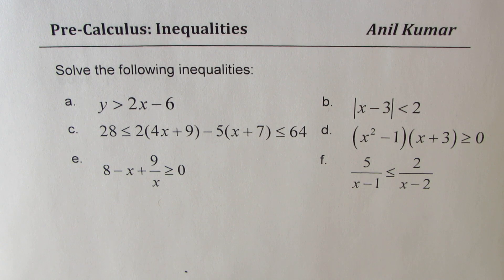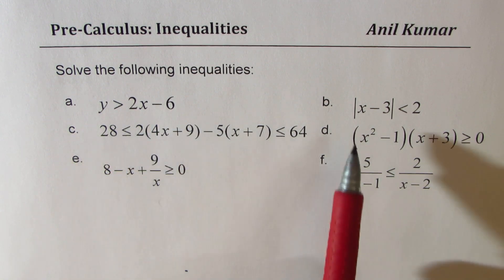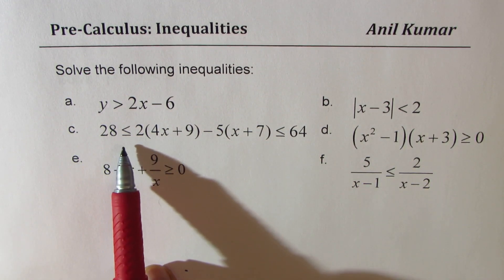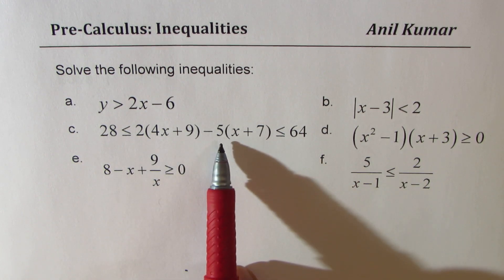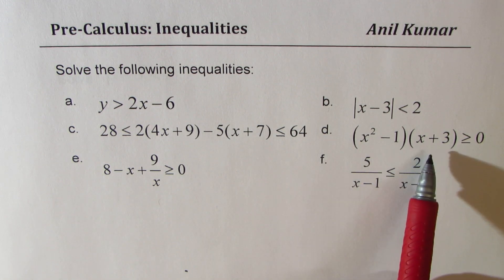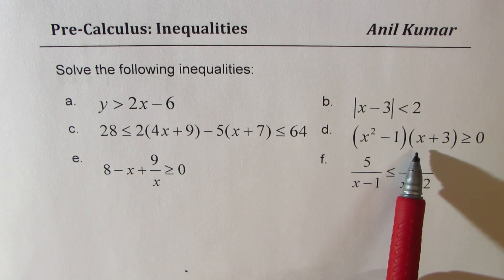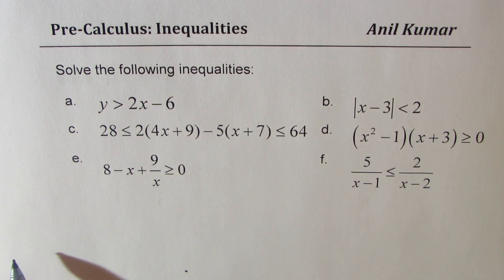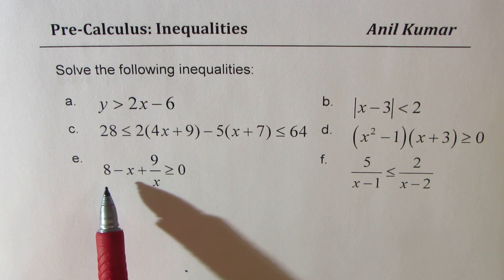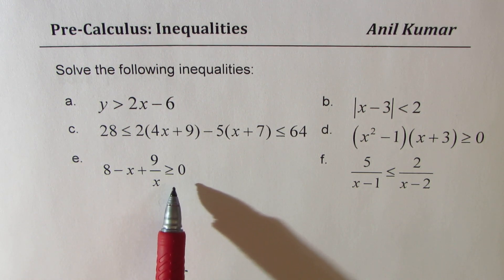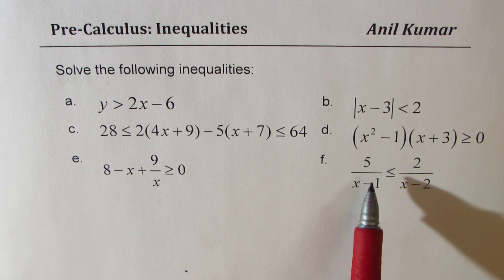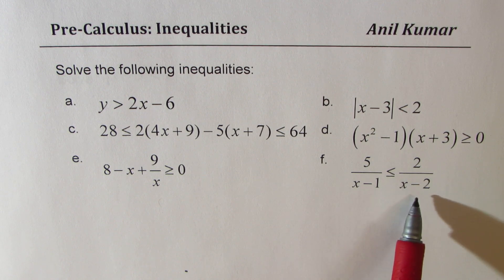The six questions are: A) y > 2x - 6; B) |x - 3| < 2; C) a double inequality where 28 ≤ 2(4x + 9) - 5(x + 7) ≤ 64; D) a polynomial inequality (x² - 1)(x + 3) ≥ 0; E) a rational expression 8 - x + 9/x ≥ 0; and F) a proper rational function 5/(x-1) ≤ 2/(x-2).